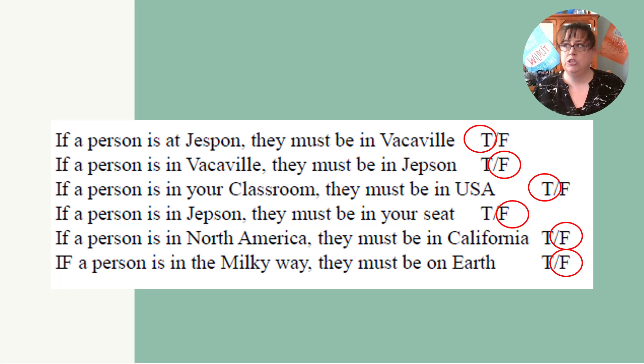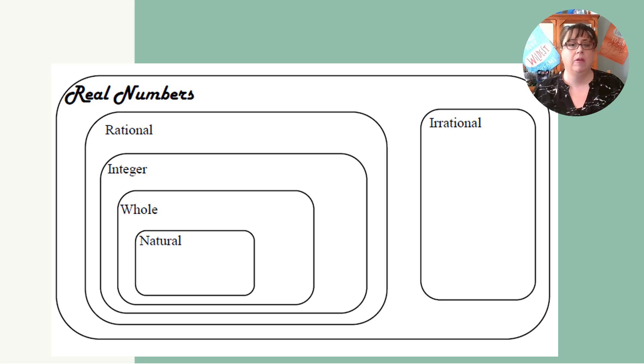So how does this relate to real numbers? Well, here's the same idea. We have natural numbers, whole numbers, integers, rational numbers, and irrational numbers, and they all live within real numbers. And if a number is an integer, then it's also a rational number and a real number, but it is not a whole number or natural number because integer does not lie inside whole number or natural numbers.